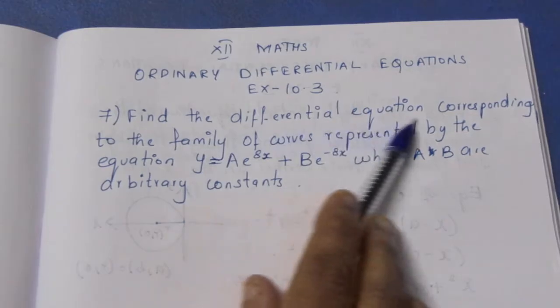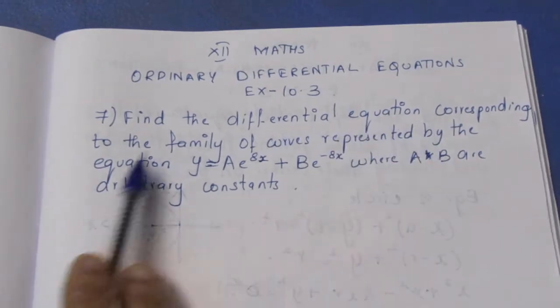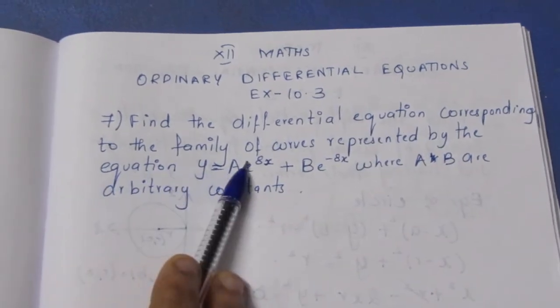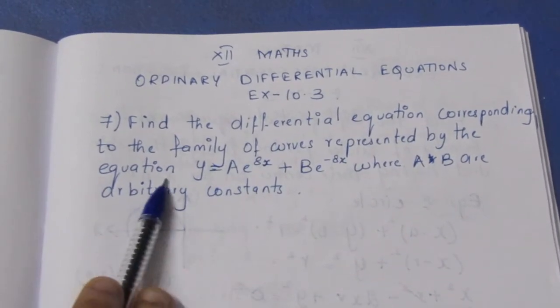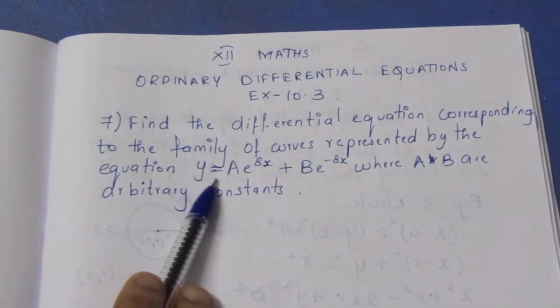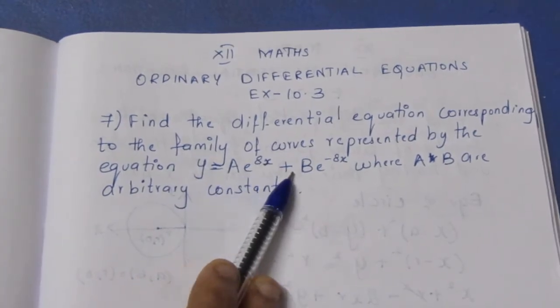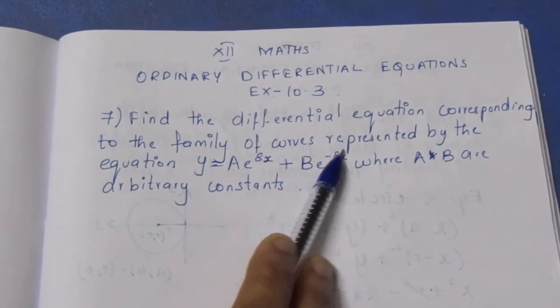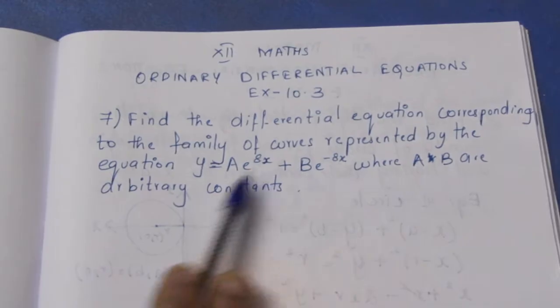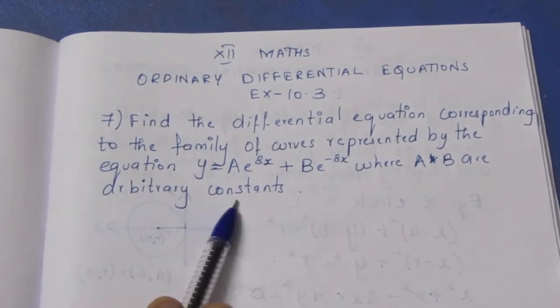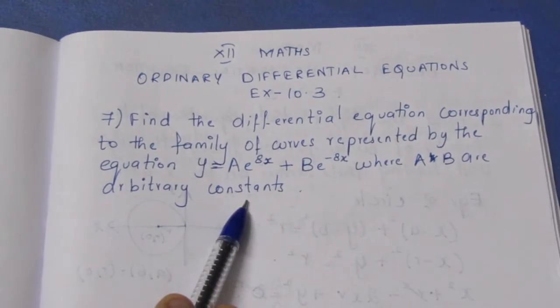Find the differential equation corresponding to the family of curves represented by the equation y is equal to a e power 8x plus b e power minus 8x, where a and b are arbitrary constants.